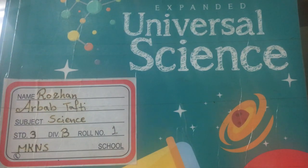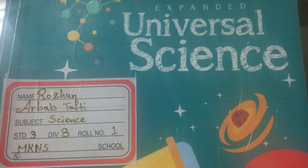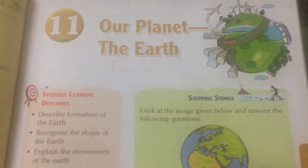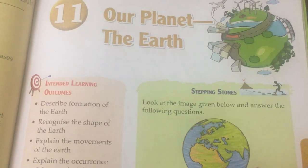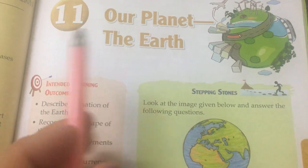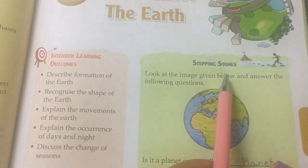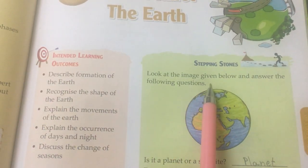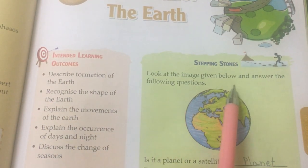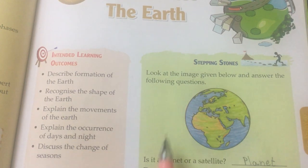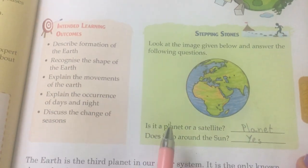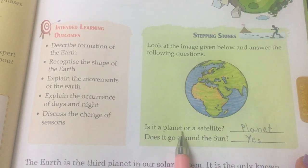Hello, Lili here. Today we are starting with Class 3 Chapter 11 of your science textbook. The name of the chapter is 'Our Planet the Earth.' Stepping Stones: look at the image given below and answer the following questions. Is it a planet or a satellite?